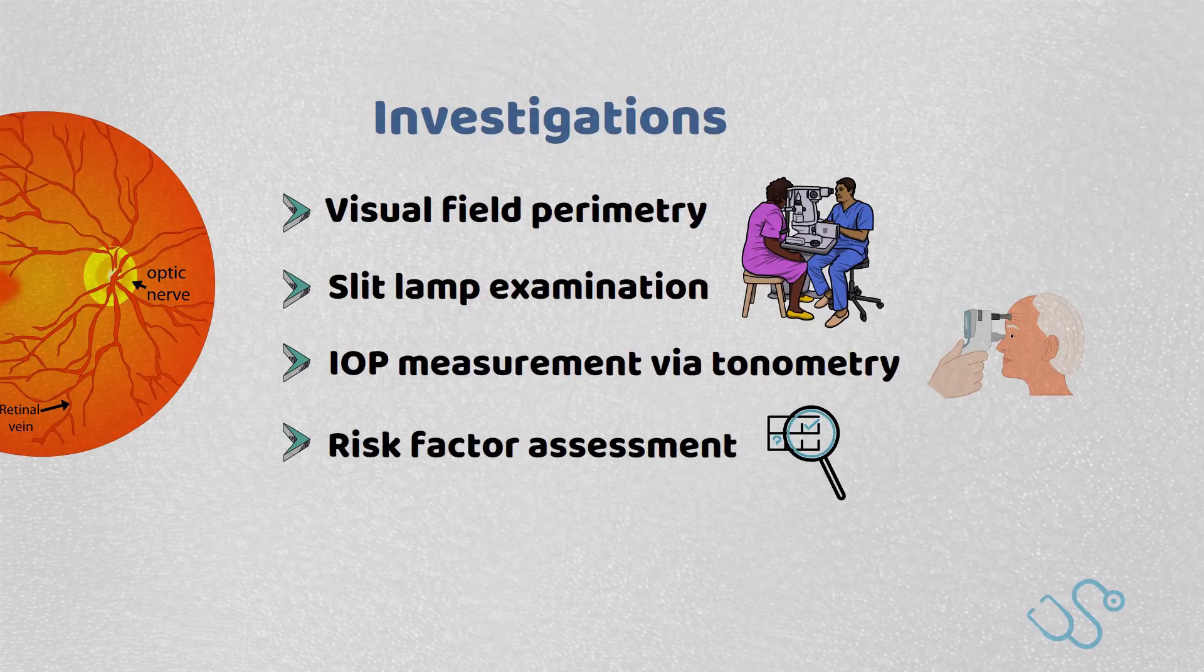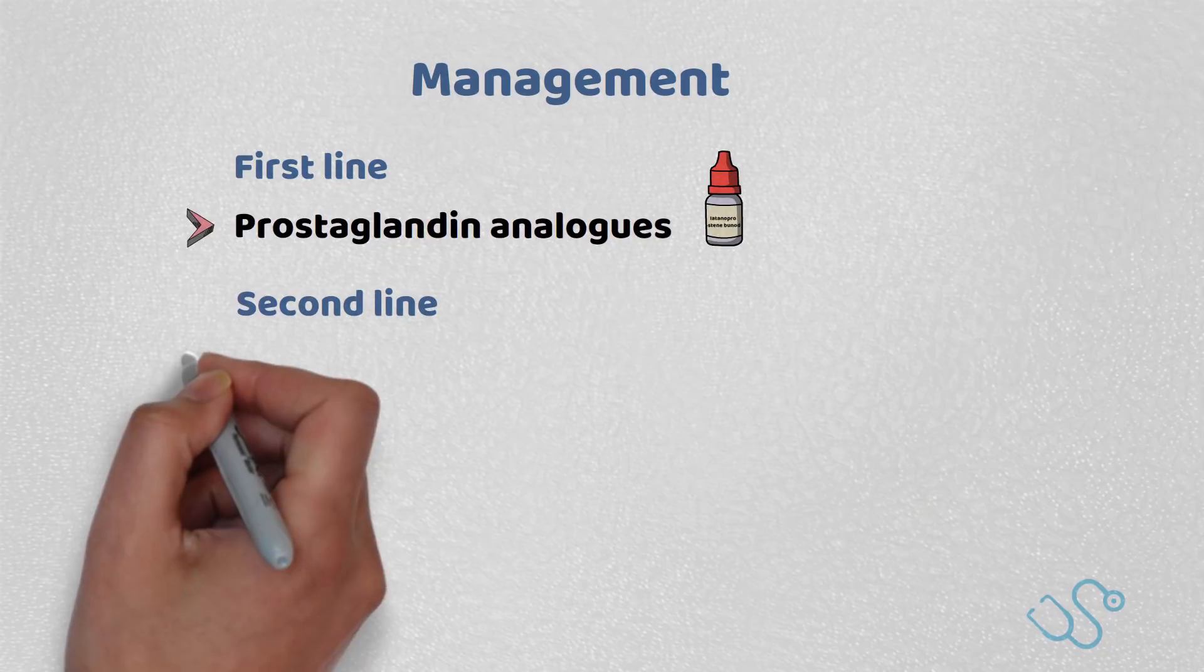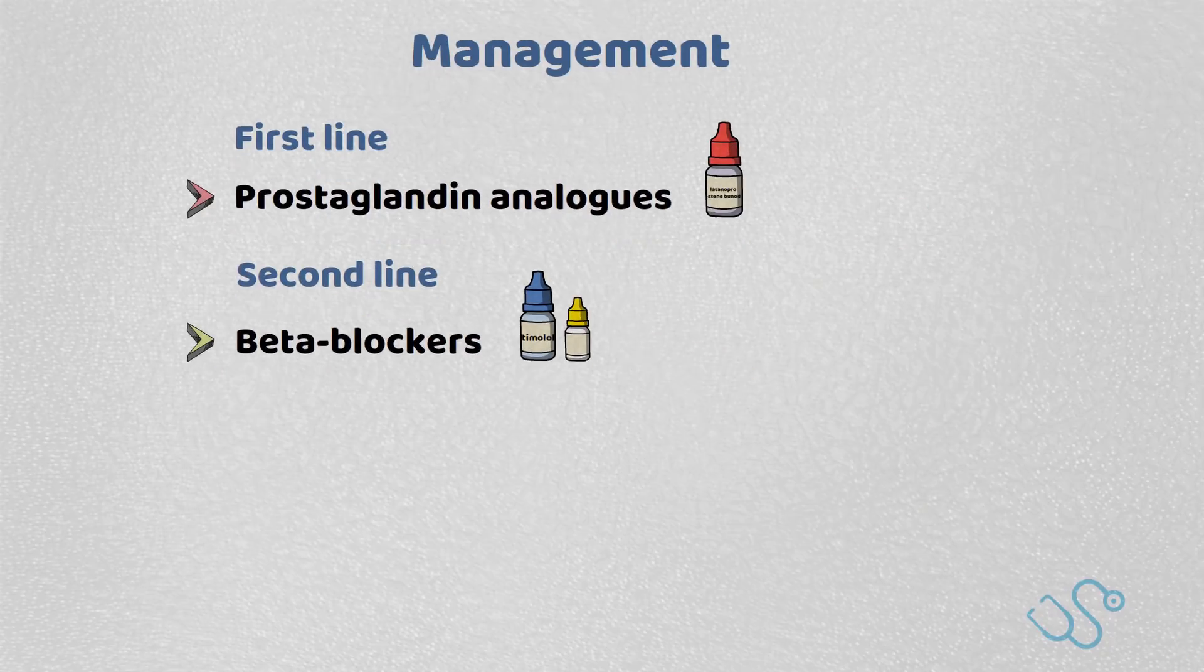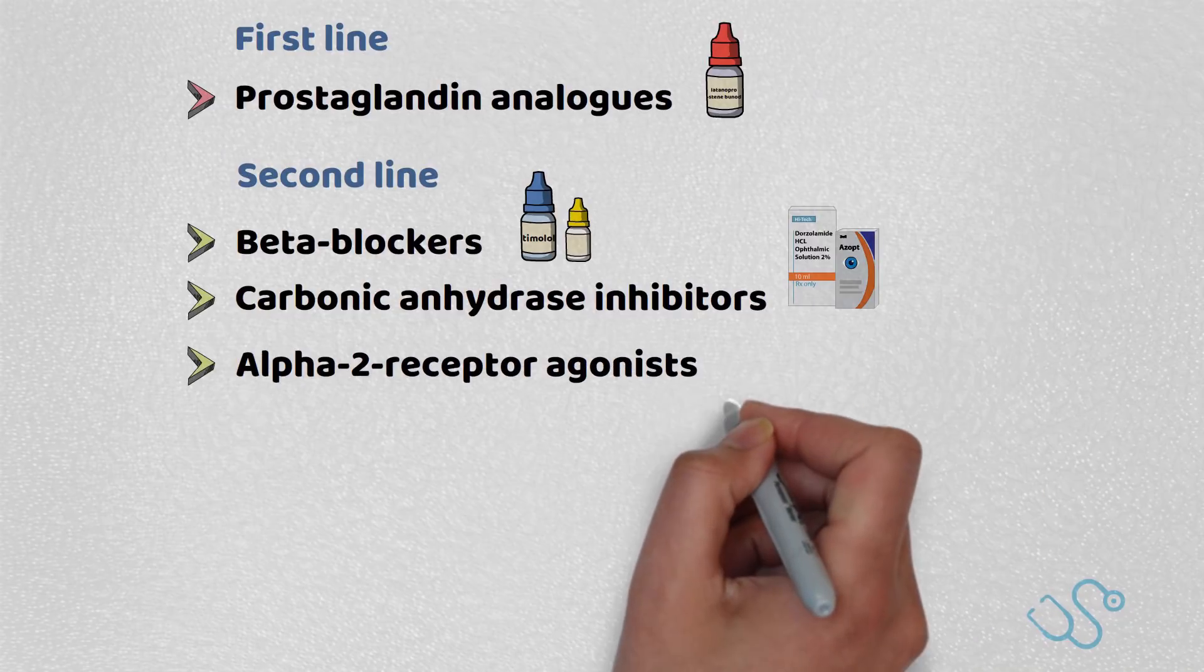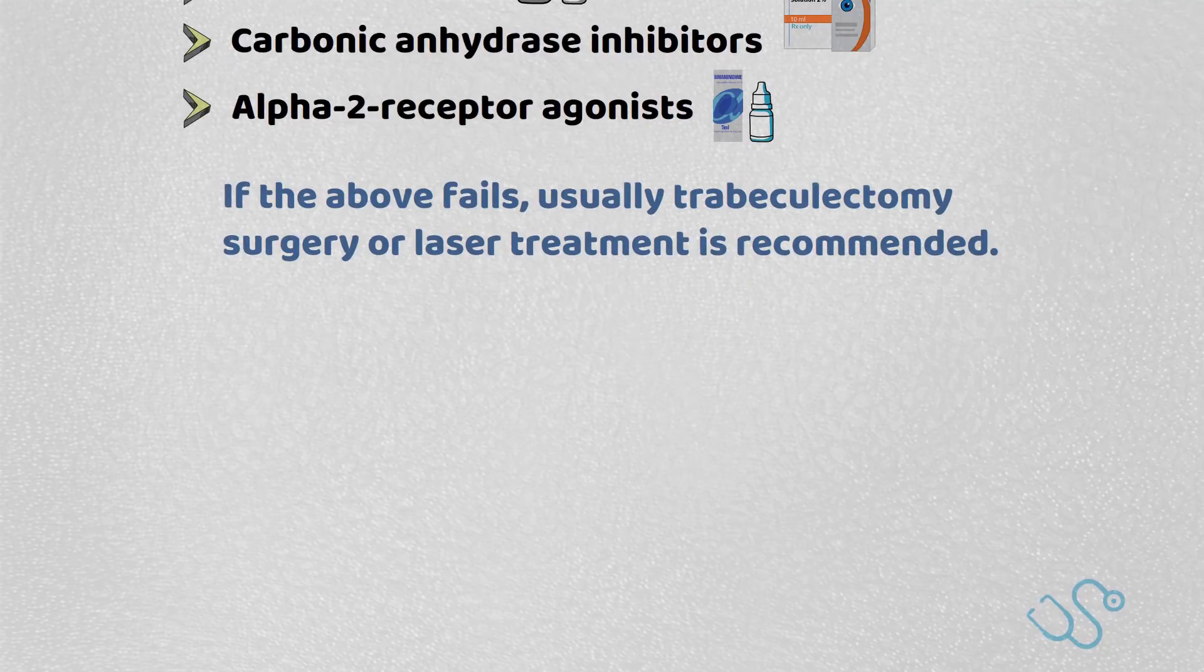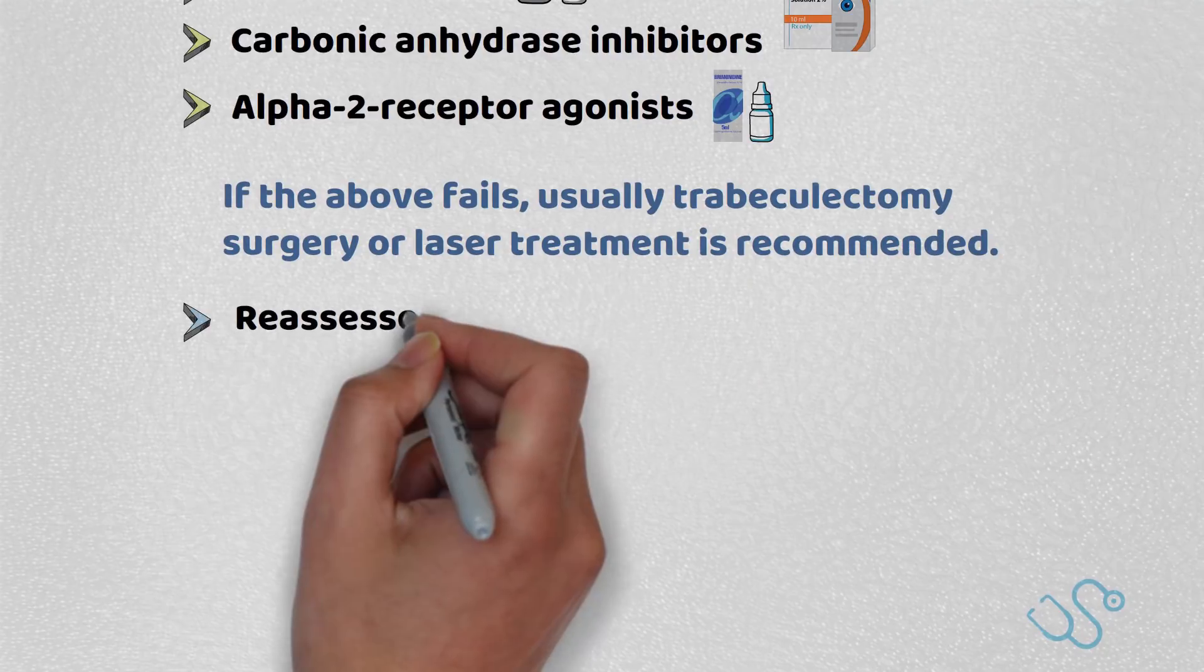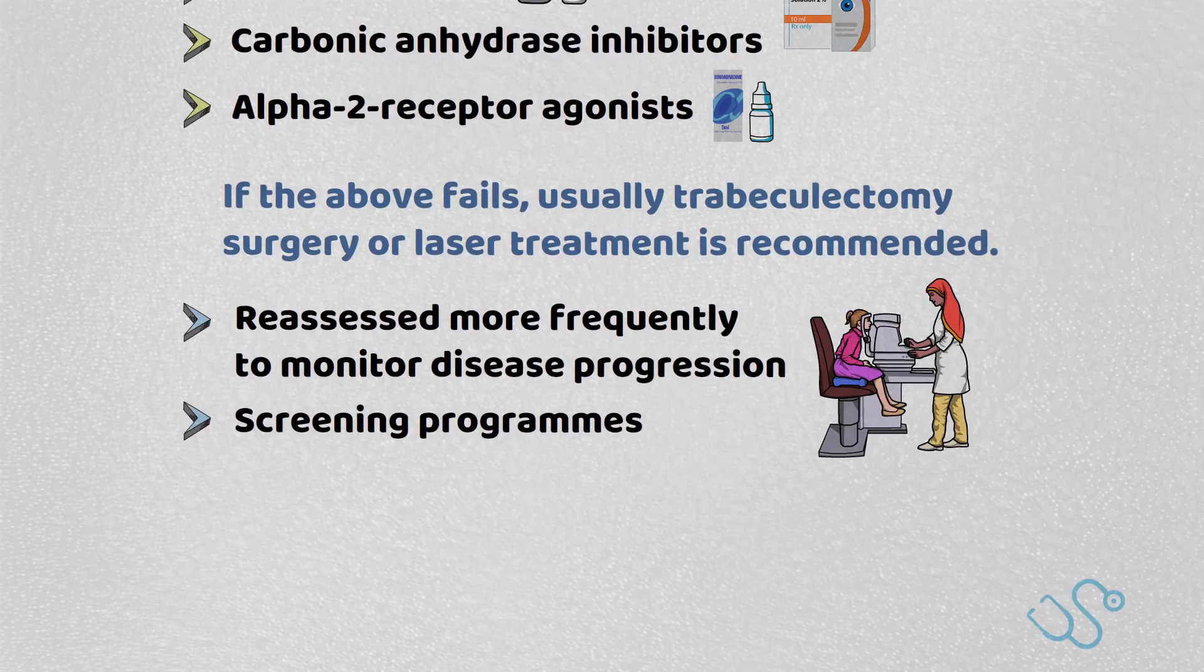With regards to management, NICE recommends first-line treatment through prostaglandin analogues and second-line treatment through a choice of beta blockers, carbonic anhydrase inhibitors, or alpha-2 receptor agonists. If all of the above fails, usually trabeculectomy surgery or laser treatment is recommended. Patients are often reassessed more frequently to monitor disease progression. There's also a national screening program for those patients more at risk.